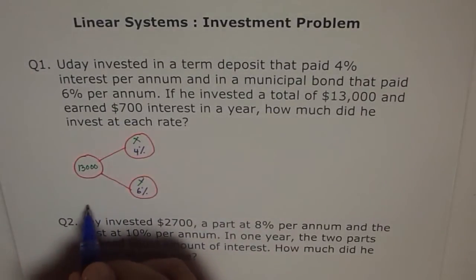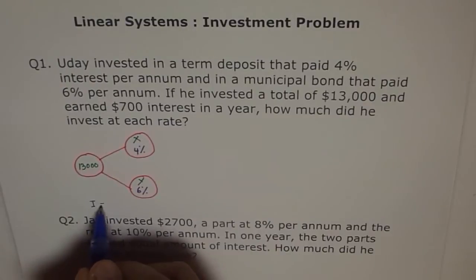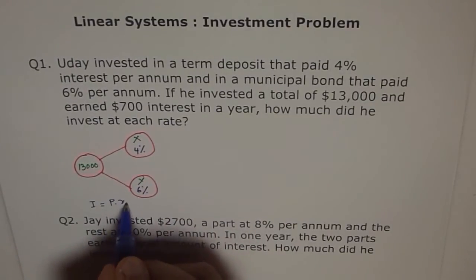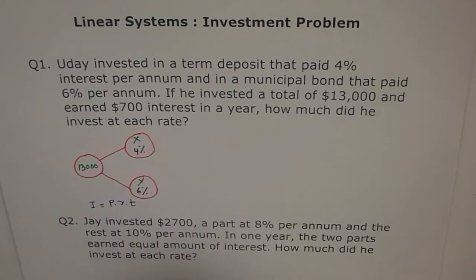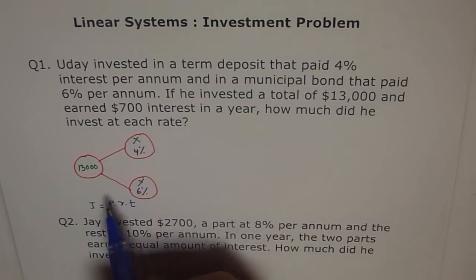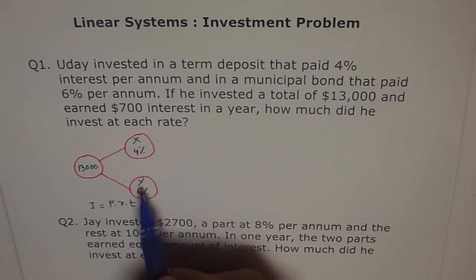Interest formula is I equals to P, the principal amount invested, rate of interest, and time. This is a simple interest. Time here is 1 year, so T is 1 for us. Rate is 4% and 6% respectively. And P is the principal amount, which is total of this much, split into X and Y.